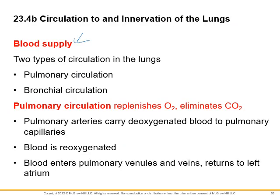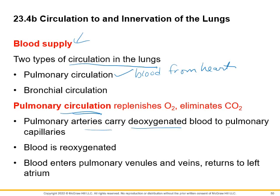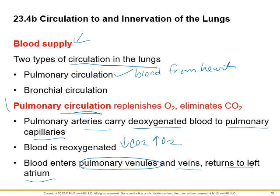Let's look at the blood supply. There are two types of circulation when talking about the lungs. Pulmonary circulation: arteries carry deoxygenated blood to the pulmonary capillaries, where you drop off CO2 and pick up oxygen. Then blood enters pulmonary venules, veins, and returns to the left atrium. Hopefully we can go through that pathway on the models — right atrium, tricuspid valve, right ventricle, pulmonary trunk, right and left pulmonary arteries, pulmonary arterioles, pulmonary capillaries.